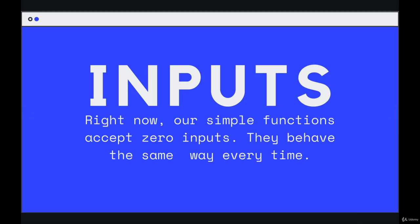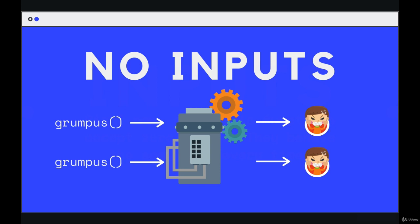So we wrote that silly grumpus function, and this is kind of what happens here, visually at least. If this is the function, we don't pass any inputs in — we just call grumpus the exact same way every time and we get the same output: those three console.logs. I didn't write them here because they took up too much space, so we get this little grumpy kid instead. But it's the same output every time, the same three lines that are printed.